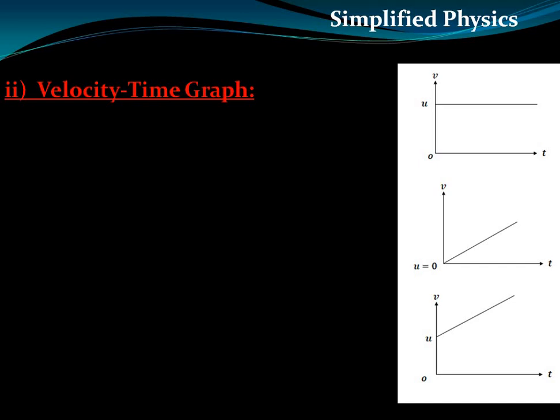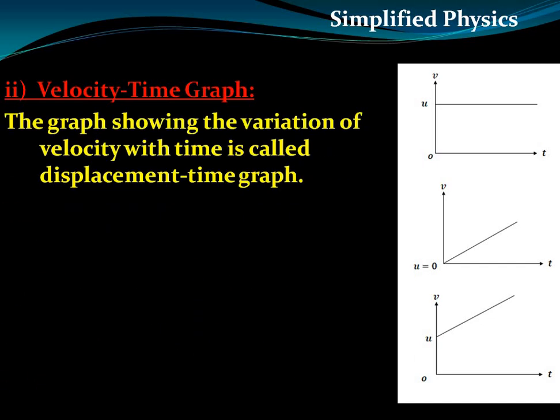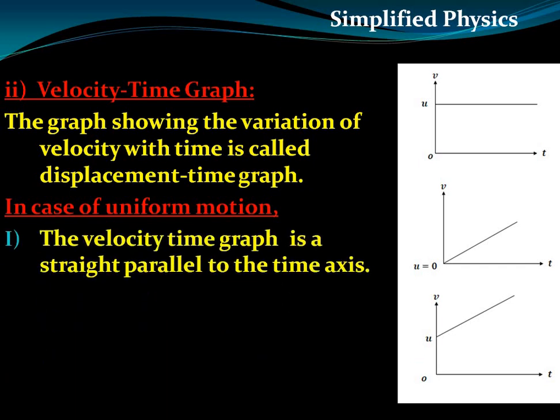The second graph is the velocity-time graph, which shows the variation of velocity with time. In case of uniform motion, the velocity-time graph is a straight line parallel to the time axis. If the body is in uniform motion, the velocity remains constant throughout, so the velocity-time graph is a straight line parallel to the axis.